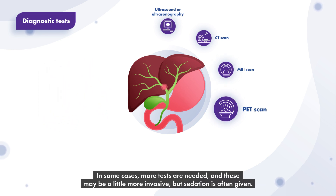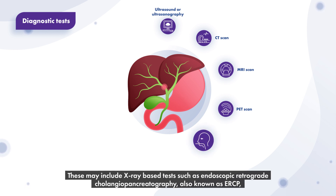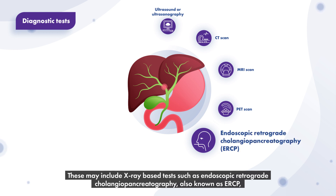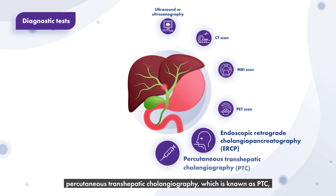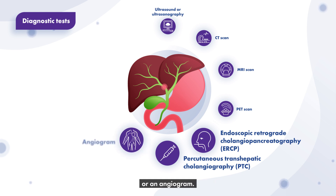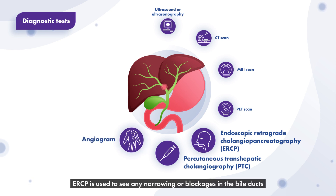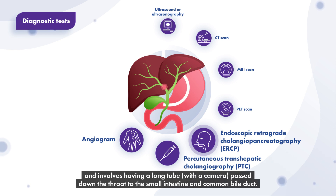In some cases, more tests are needed and these may be a little more invasive, but sedation is often given. These may include X-ray based tests such as endoscopic retrograde cholangiopancreatography, also known as ERCP, percutaneous transhepatic cholangiography, known as PTC, or an angiogram. ERCP is used to see any narrowing or blockages in the bile ducts and involves having a long tube with a camera passed down the throat to the small intestine and common bile duct.